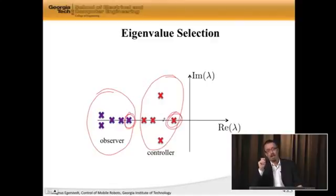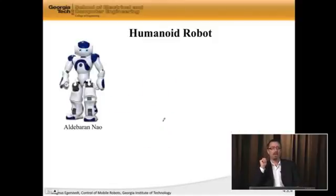Having said that, let's actually use this to control a humanoid robot. And this is the Aldebaran Nao that we're going to be working on. And in fact, what we can control on this thing are joint angles, meaning how the different angles are moving.